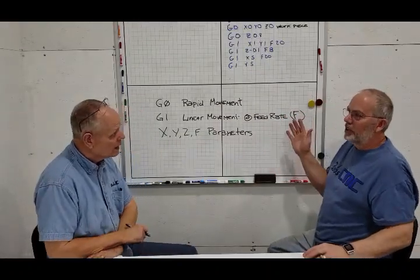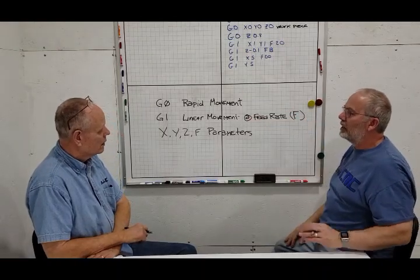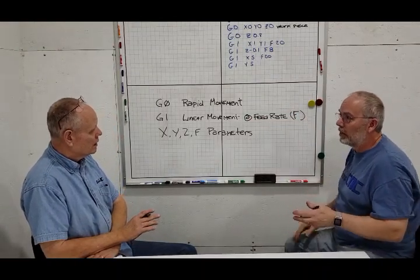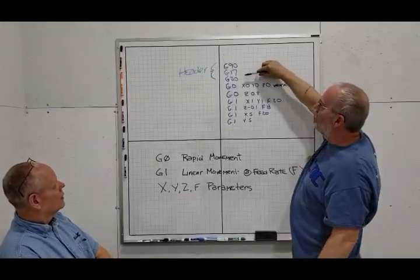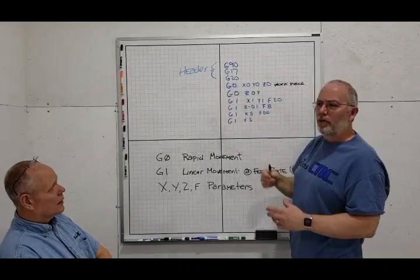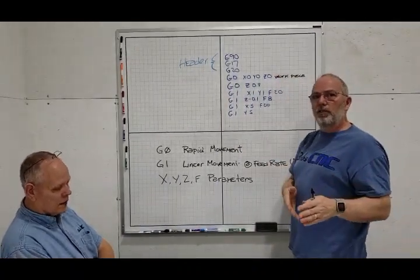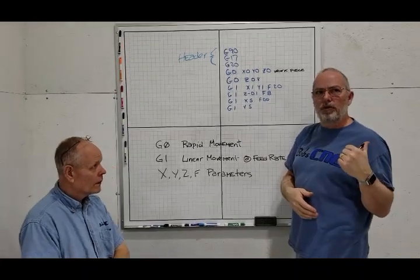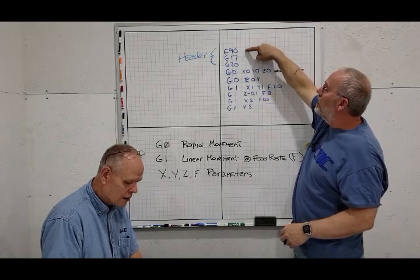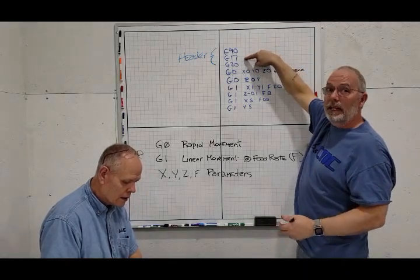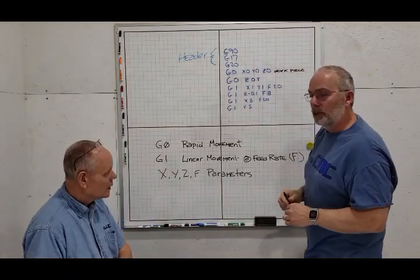So I've got us a short example here that we can just kind of cover to show what the G-0 and the G-1 mean. So we'll go ahead and get started up here. So we got the G90 and the G17 and 20, which were all a part of the header, which really just means that they're at the beginning of the file. If this is confusing for you, we have a video that was done before this that you might want to review so you can get those. But this is absolute movement and G17 is in the X, Y plane. And then G20 means that we're doing it in inches, right?